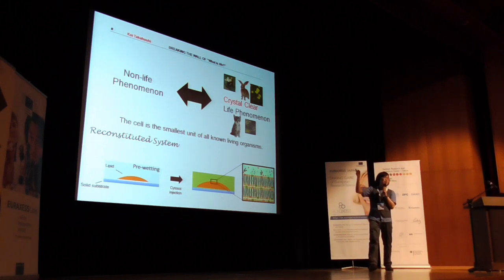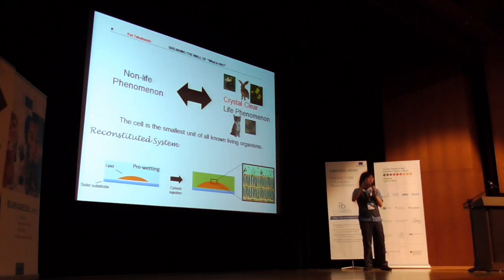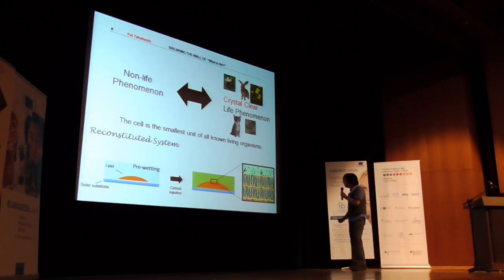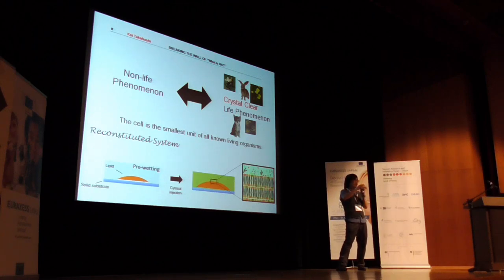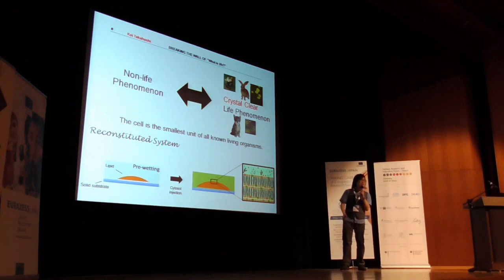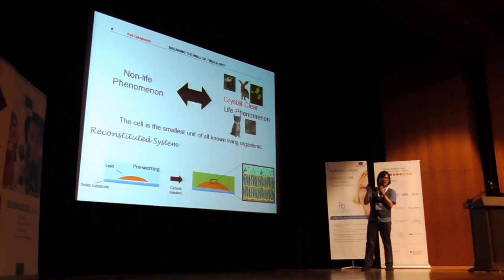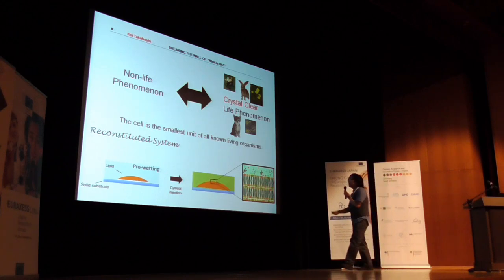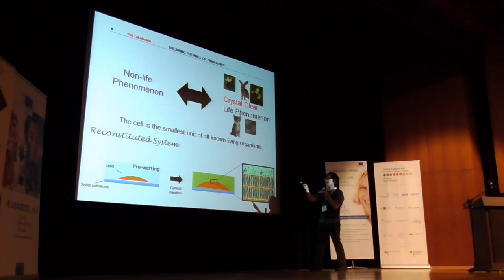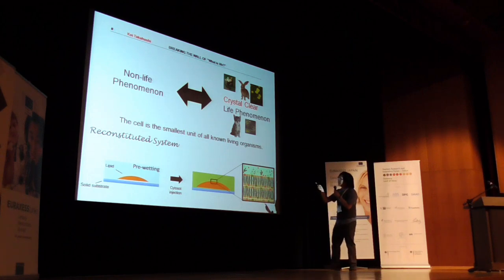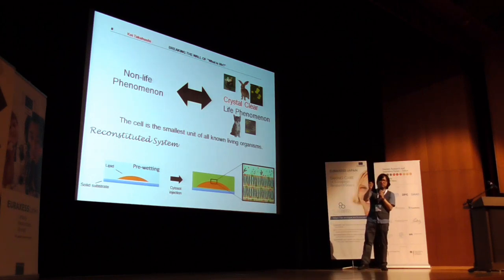I destroyed the cell once and integrated them again. As in a real cell, the cell membrane, composed of the lipid layer, covers the cytosol, including many types of protein. I extracted the lipid layer and cytosol, separately, from the real cell, and I put the lipid layer on a solid substrate. Then I injected cytosol on there.